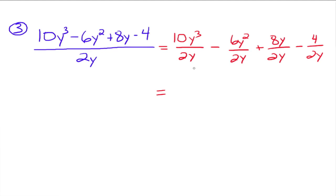10y cubed divided by 2y is going to go to 5y squared. Minus 6y squared over 2y is going to go to minus 3y. And then plus 8y divided by 2y. The y's go away. 8 divided by 2 is 4. And then 4 and 2, that's going to leave a 2 on the top and a y in the denominator. And so this is what we get after we divide this polynomial by the monomial 2y.